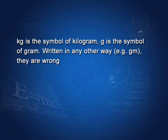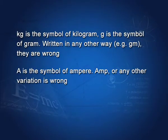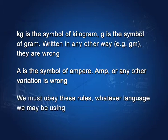Similarly, KG is the symbol of kilogram and G is the symbol of gram. Written in any other way, such as GM, is wrong. Capital A is the symbol of ampere — 'Amp' or any other variation found in books is wrong. We must obey these rules whatever language we may be using for learning.